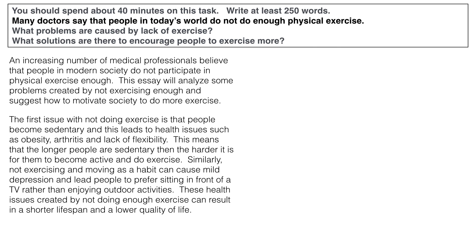So straight into what that first problem is. 'The first issue with not doing exercise is that people become sedentary, which leads to health issues.' I also include some examples: obesity, arthritis, lack of flexibility. So that's a topic sentence with examples showing what the first problem is focusing on. I do need to give more information, and I do that in the second sentence. Notice I also include the topic in there — don't just say 'the first issue is...'; say the first issue with what? With exercise. Say the topic again; it's a topic sentence. Then I explain: 'This means that the longer people are sedentary, the harder it is for them to become active and do exercise.' So being sedentary makes it harder to start. That's a big problem.